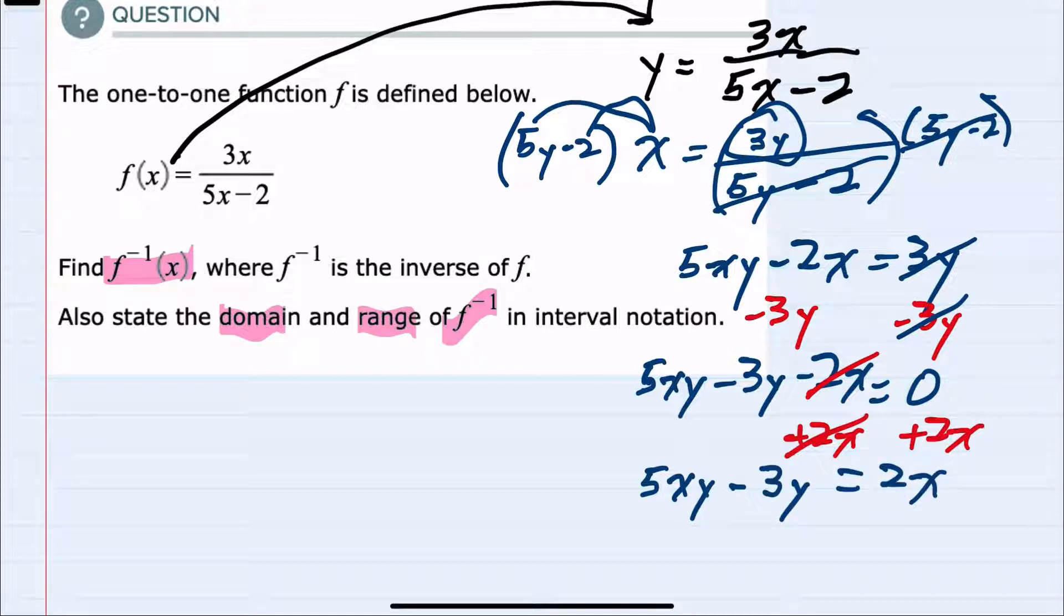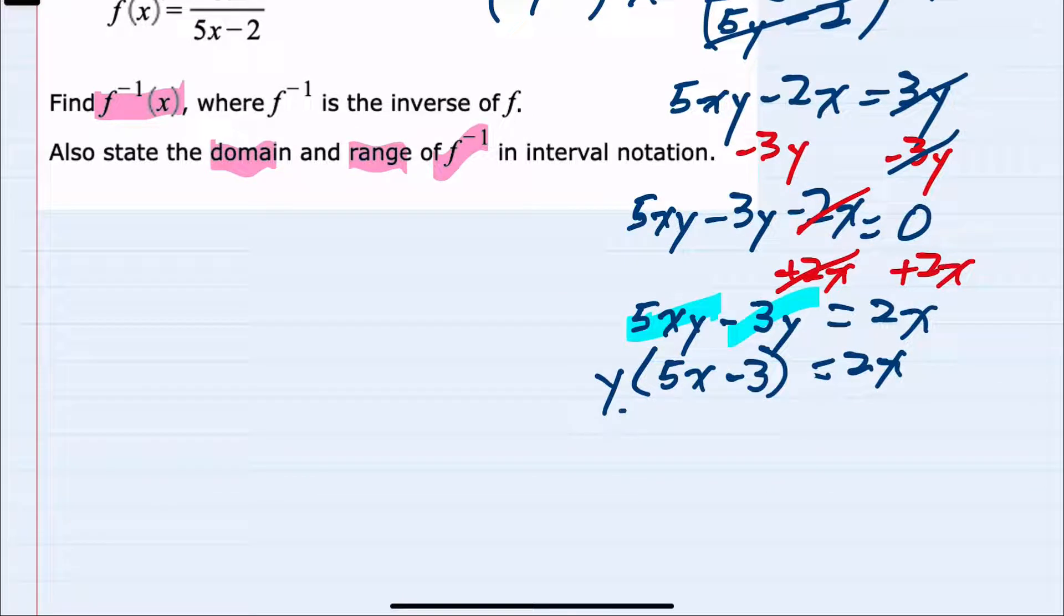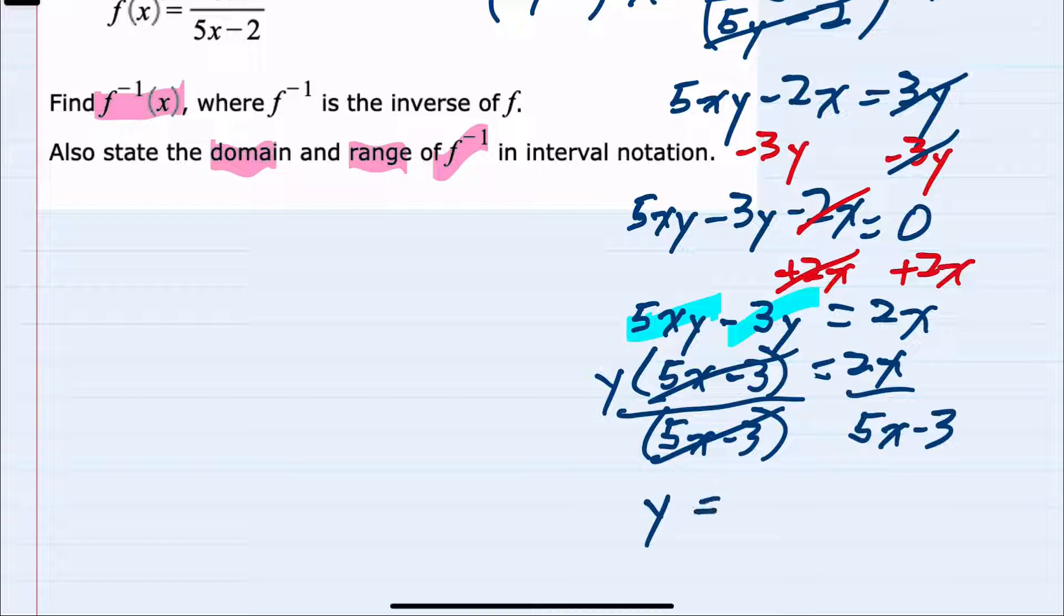And now to solve for y, I can see that I can factor out a common y on the left-hand side. Factoring out a y, I would be left with 5x in the first term and a minus 3 in the second term. Again, once I factor out the y, equals 2x on the right-hand side. Lastly, here to solve for y, I just need to divide the 5x minus 3 on both sides to get the y by itself. The left-hand side cancels, so y equals 2x over 5x minus 3.